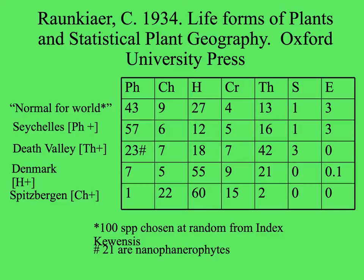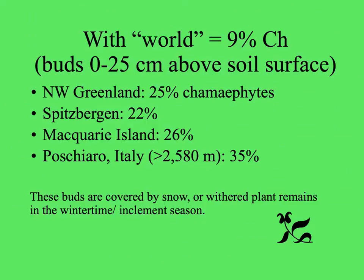Spitsbergen, which is even colder and higher, has a hemicryptophyte surplus greater than the normal for the world, with buds right at the surface of the ground. In these extreme cold places toward the poles — or at very high elevations with a lot of snow — there is a chamaephyte surplus. The buds might seem at risk of freezing, but they are actually covered with snow, which can insulate them during the coldest parts of the winter.